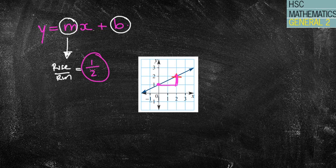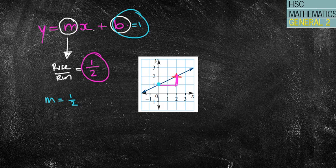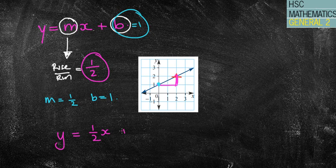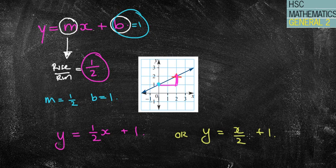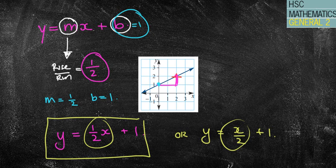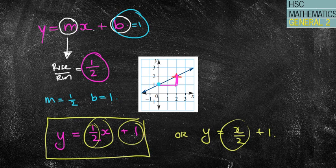So I now have a gradient value of a half. My b value, my y-intercept, can be seen from this point here, which equals 1. So if my m equals a half and my b equals 1, I'm simply going to rewrite that formula and have y equals a half x plus 1. Some people may write it as y equals x over 2 plus 1, because those two things mean the same thing. This is often referred to as the gradient y-intercept formula, because I can see the gradient from here and I can see the y-intercept from here.